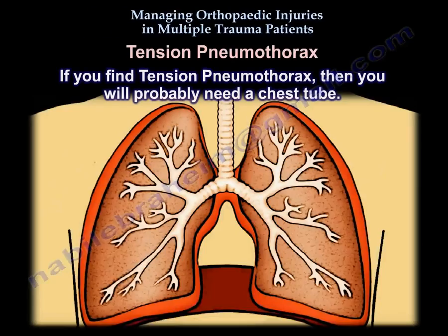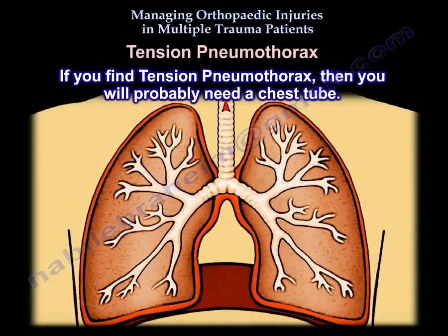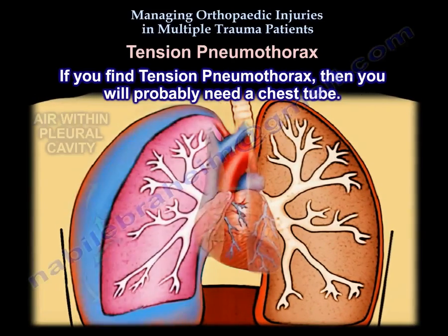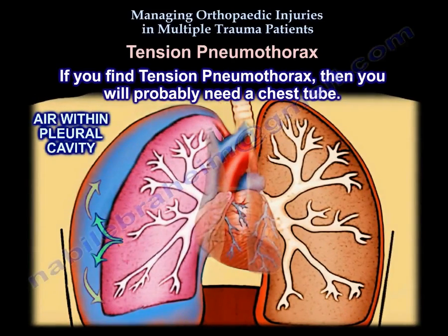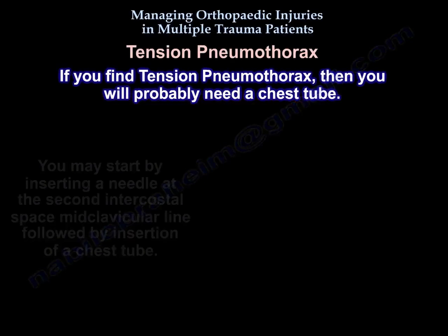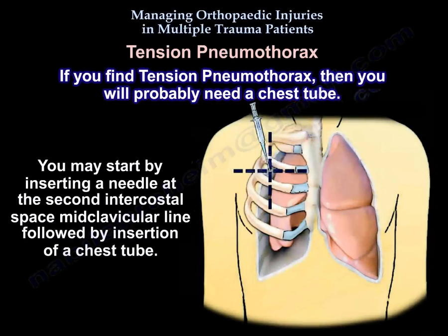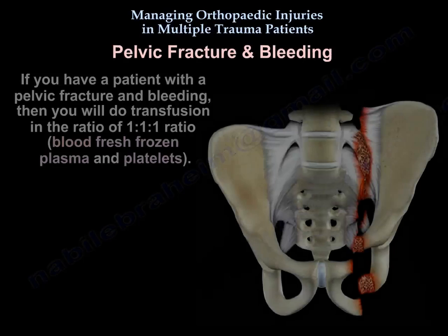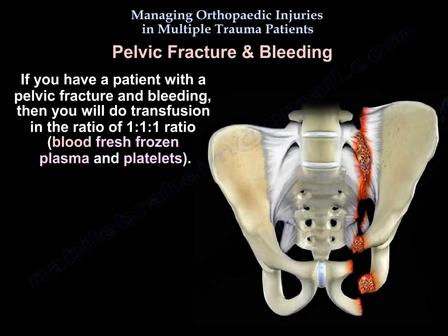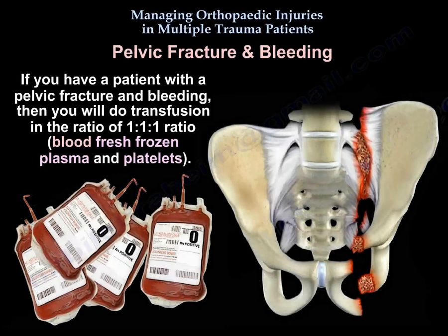If you find tension pneumothorax, you will need a chest tube. You may start by inserting a needle at the second intercostal space midclavicular line, followed by insertion of a chest tube. If you have a patient with a pelvic fracture and bleeding, you will do transfusion in the ratio of 1 to 1 to 1 — blood, fresh frozen plasma, and platelets.